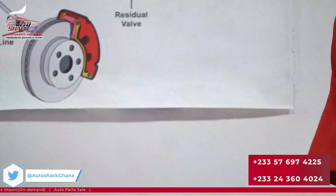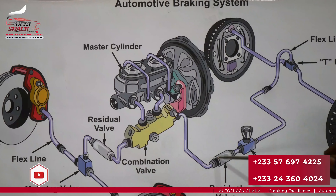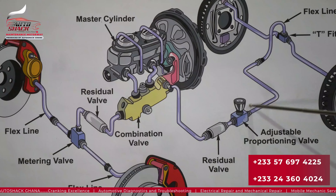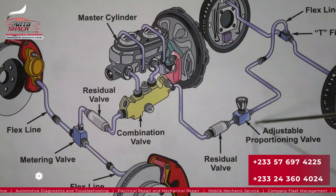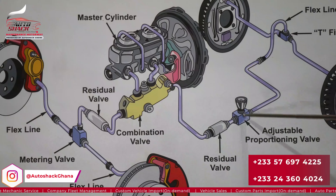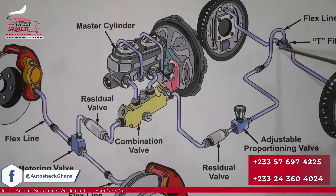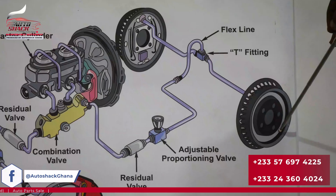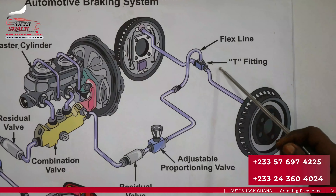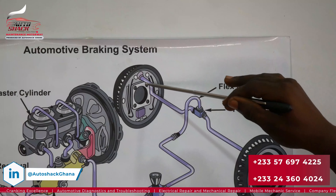At the rear, the fluid comes through the residual valve, which maintains brake pressure, and then goes through the adjustable proportioning valve. At the adjustable proportioning valve you can adjust the braking effect to prevent the wheels from locking up. The brake fluid then exits through the brake lines to a T-fitting, which splits the single line into two — one to the left rear wheel and one to the right.